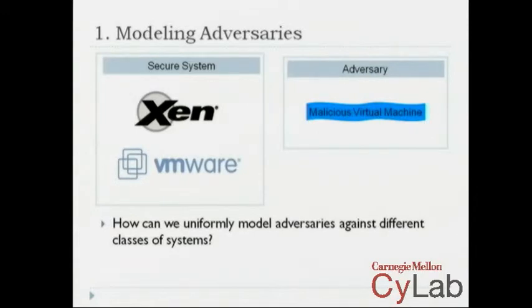Ideally, what we would like to do is to have a generic way of modeling adversaries. It is possible, and we have done that in previous work, to focus on a specific domain — for example, network protocols — and for that domain you might have a canonical adversary model. But if you want a theory that spans across different classes of systems and develop reasoning principles of that form, then we want this reasoning to be parametric in the adversary models. The first question we need to address is: how can we uniformly model adversaries against different classes of systems?